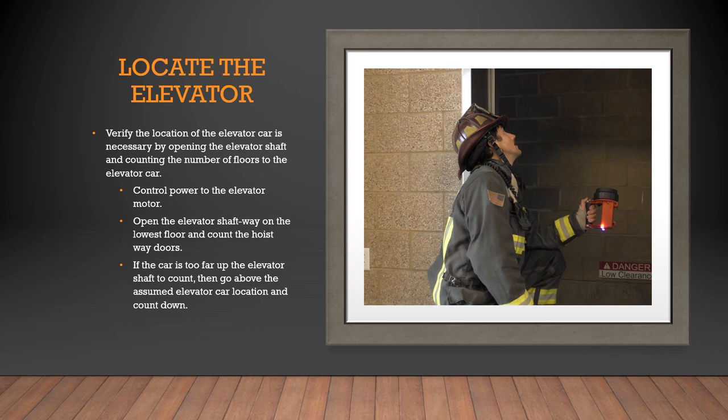The last step to locating the elevator is to visualize the elevator car if needed. After we have controlled power to the elevator motor, we can confirm the position of the elevator car by opening the hoistway. Normally we want to do this from the lowest floor, or if necessary, from just one floor above the elevator, to limit the drop distance in the open hoistway. Before doing this, make sure you have identified a safety officer. We never want to operate in an open hoistway without safety, and we want to make sure we have helmet and eye protection to prevent injuries.